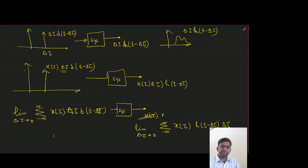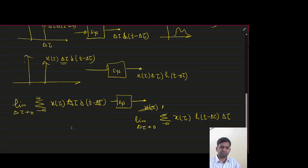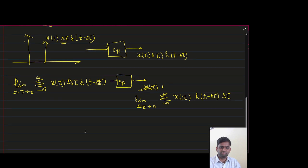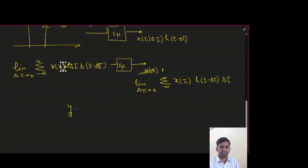Or you can say y(t) equals integral from minus infinity to infinity x(tau) h(t - tau) d tau. Delta tau is converted to d tau when delta tau tends towards 0.